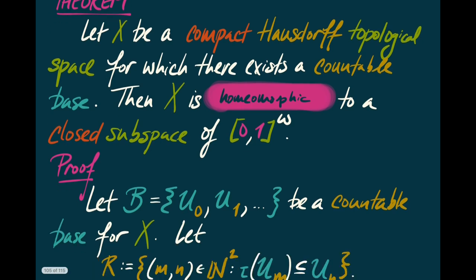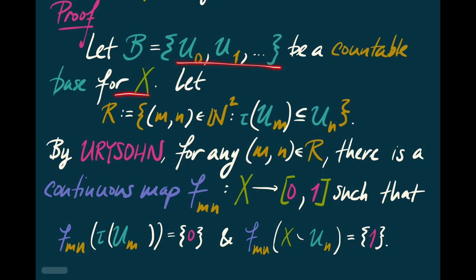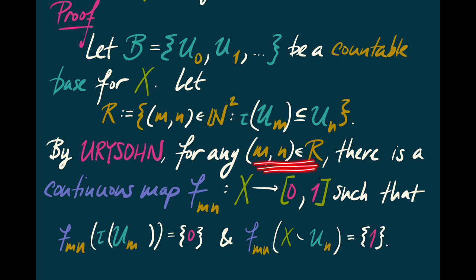How do we prove this? We begin by selecting a countable base B for X, consisting of U_0, U_1, … enumerated over the natural numbers. We let R be the set of pairs of natural numbers such that the closure of U_m is contained in U_n. By the Urysohn Lemma, for every such pair we can write down a continuous map f_{mn} from X to [0,1] such that every point in the closure of U_m goes to 0 and every point in the complement of U_n goes to 1. That is simply guaranteed by the Urysohn Lemma.